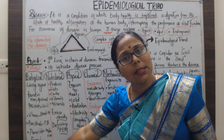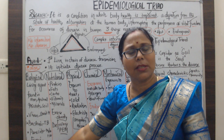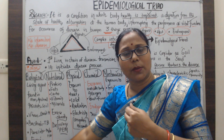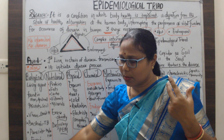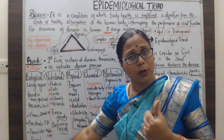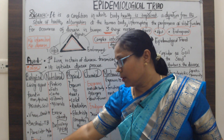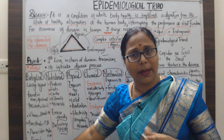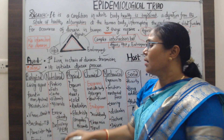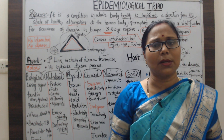Biological agents are living things — microorganisms such as bacteria, viruses, and fungi. For example, Mycobacterium tuberculosis causes tuberculosis; the coronavirus caused COVID-19; and malaria is caused by a parasite. These living things fall under the biological section of agents.